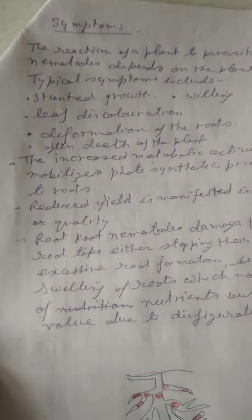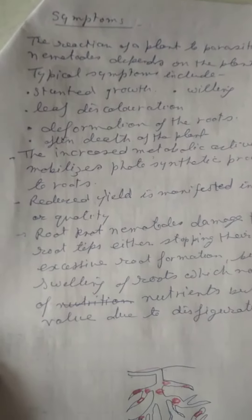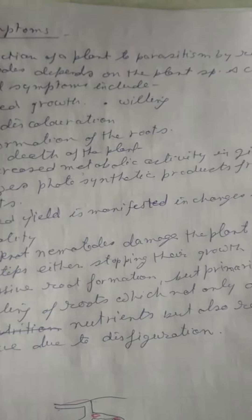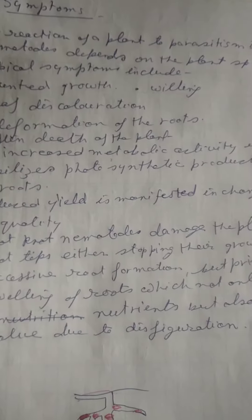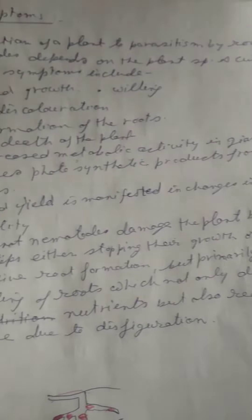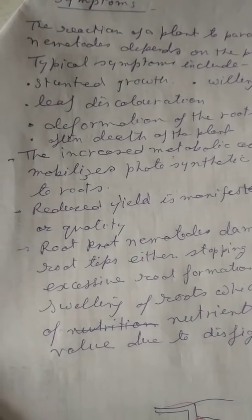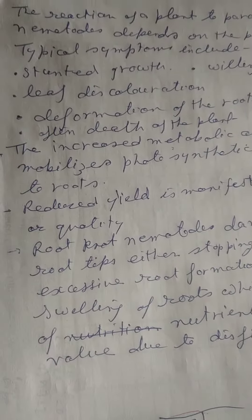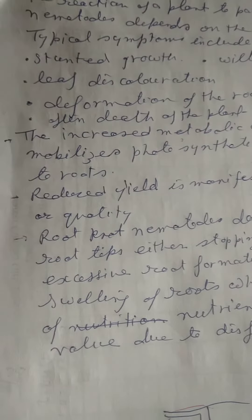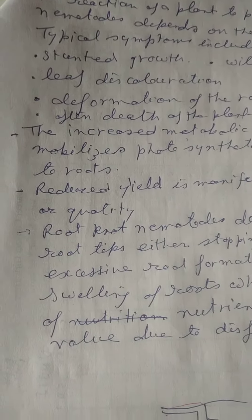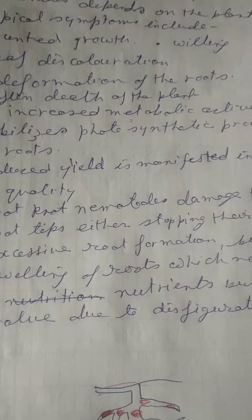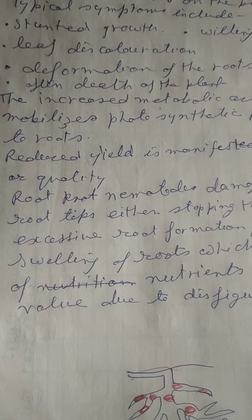Symptoms of Root Knot Nematode Disease. The reaction of a plant to parasitism by root knot nematodes depends on the plant species and cultivar. The important typical symptoms include stunted growth, wilting of leaves, leaf discoloration, deep formation of the roots, and often death of the plant.